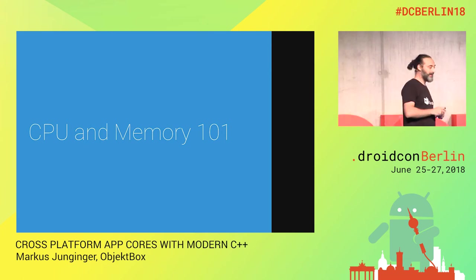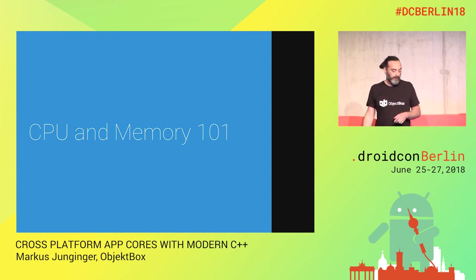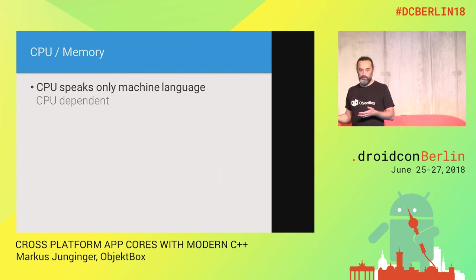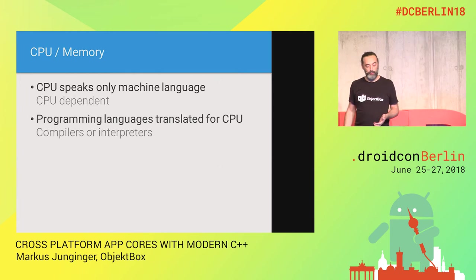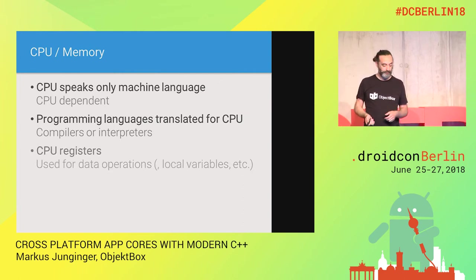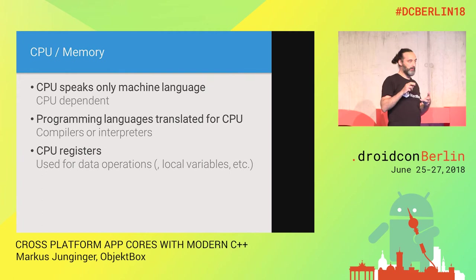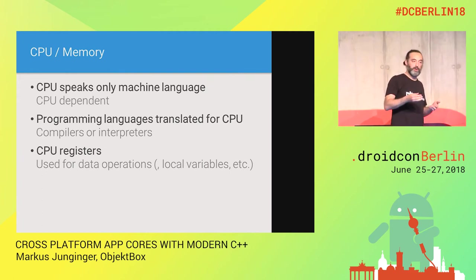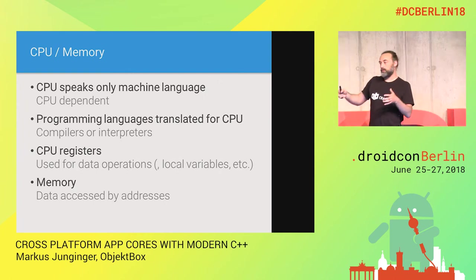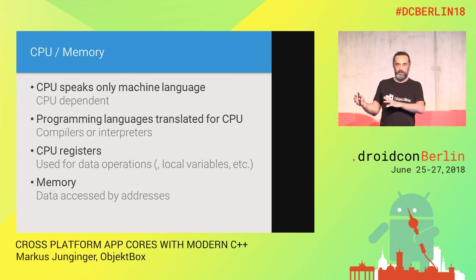Before going on, let me take a step back and talk about some fundamentals closer to the hardware. A CPU only understands machine code — just bytes in a specific order. To write code for it you need a compiler or an interpreter. A CPU has registers, which are very important because they're very fast to access, and most operations on data are done within those registers. Memory is a chunk where every byte has its address — just a number.